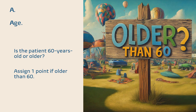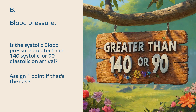A: Is the patient 60 years old or older? Assign 1 point if older than 60. B: Is the systolic blood pressure greater than 140 systolic or 90 diastolic on arrival? Assign 1 point if that's the case.